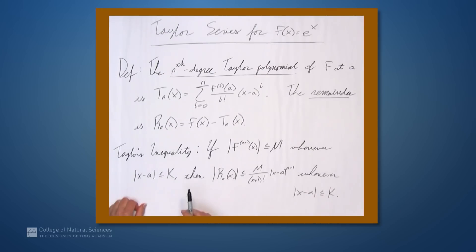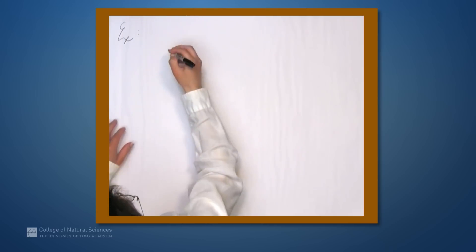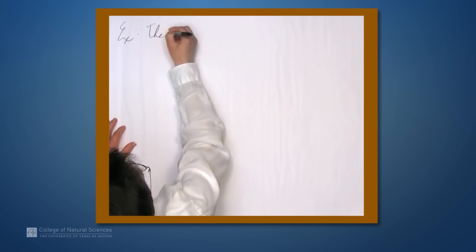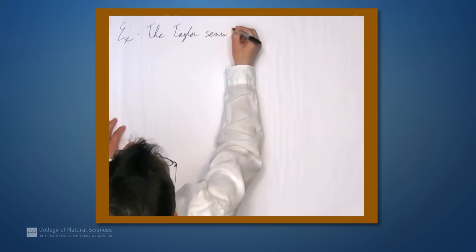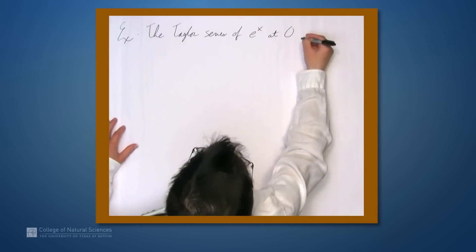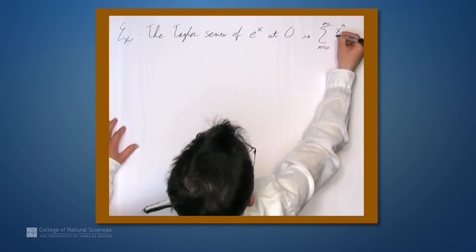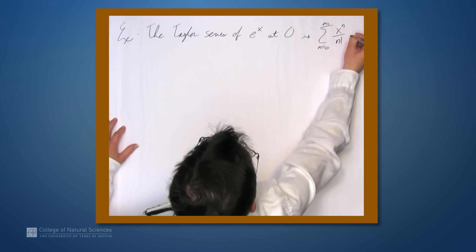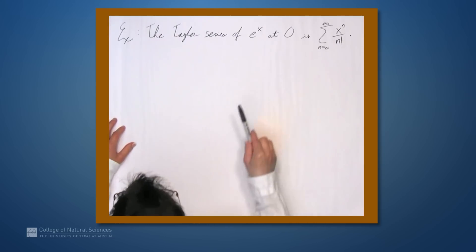We're going to use this inequality to show that e to the x equals its Taylor series. We know that the Taylor series of e to the x centered at 0 is the sum from n equals 0 to infinity of x to the n over n factorial. What we want to show is that e to the x in fact equals this series.